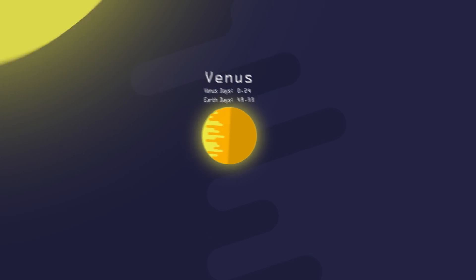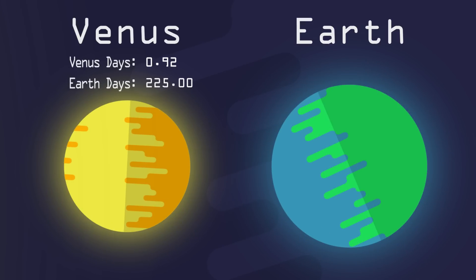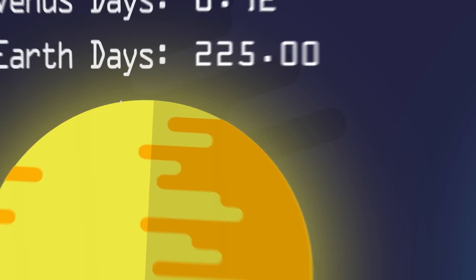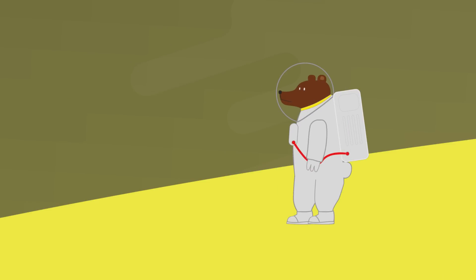The orbit of Venus around the Sun takes 225 Earth days, making a year on Venus shorter than a day on Venus. So imagine you're an astronaut on Venus and it's a day before your birthday. You'd have to wait a whole year for your birthday to arrive. That's awful.